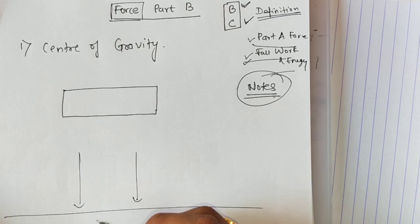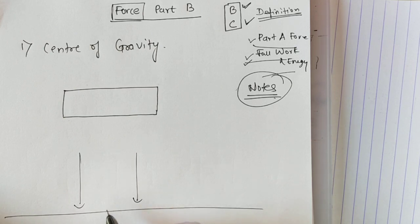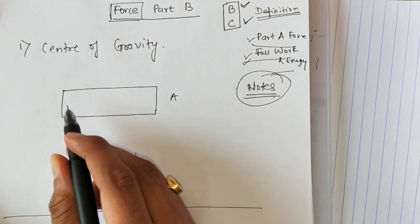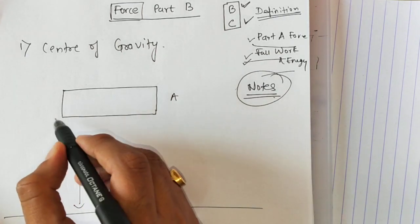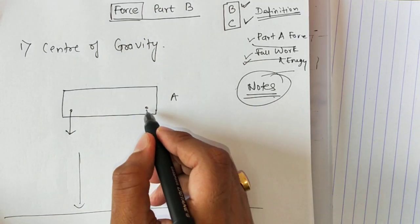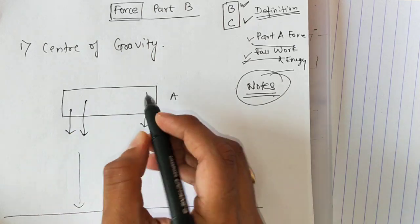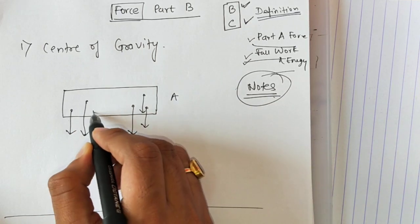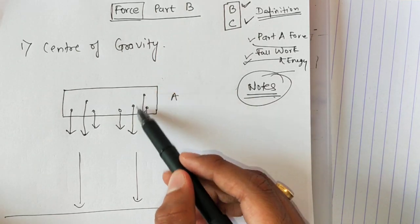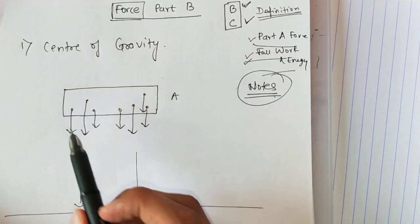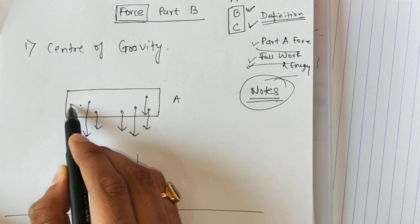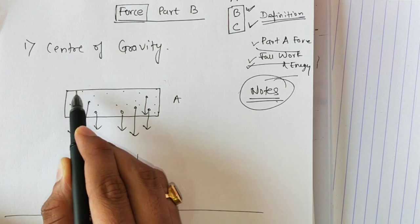Any object is pulled towards the center of earth because of the force of gravity. So object A is pulled by earth in the downward direction from every point. Earth is pulling the object from this point downward, from this point downward — from every point. It is not that earth only pulls the right side or left side or center; earth pulls the entire object down. Each and every particle of this object is pulled down.